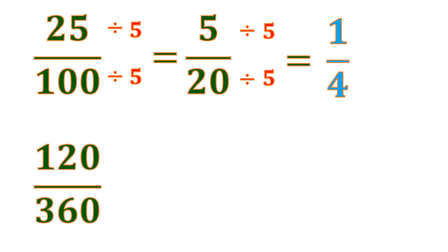Another example. This is a bigger example, 120 over 360. So let's divide this. These are both divisible by 10 because it ends with 0. They are both multiples of 10. So 120 divided by 10 is 12, and 360 divided by 10 is 36.